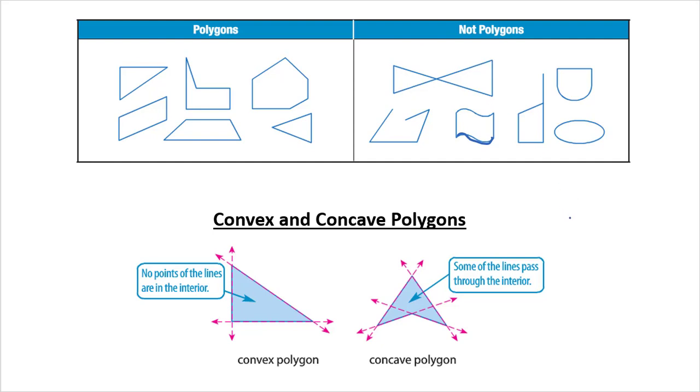Convex and concave polygons. So I look at this differently than our book. I guess I was just taught it differently. When you extend the lines of the sides, they don't extend into the interior at all. Versus this one, a concave, I look at it as like a cave. It has a dent in it. Our lines extend into it.